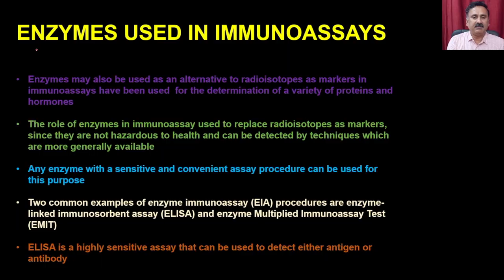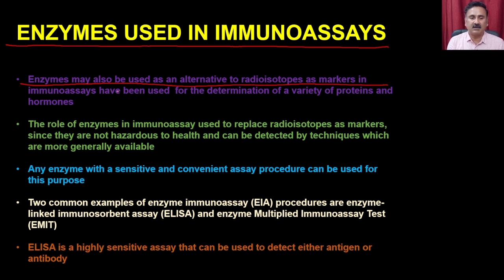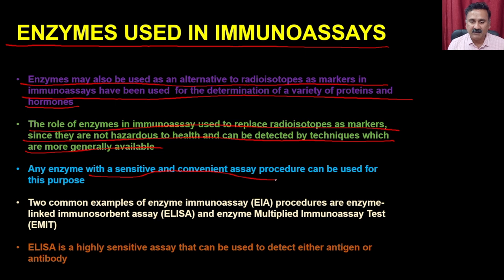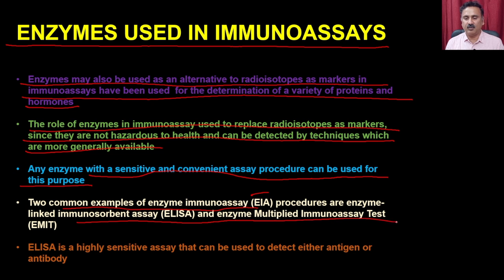Apart from these diagnostic marker enzymes, enzymes can also be used to perform different types of assays for diagnostic purposes. Enzymes are being used in immunoassays — for example, they may be used as an alternative to radioisotopes as markers in immunoassays and have been used for the determination of a variety of proteins and hormones. Enzymes replace radioisotopes since they are not hazardous to health and can be detected by techniques which are more generally available. The two common examples are enzyme-linked immunosorbent assay (ELISA) and enzyme multiplied immunoassay technique (EMIT).